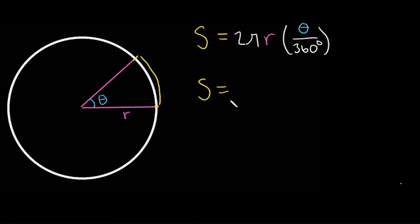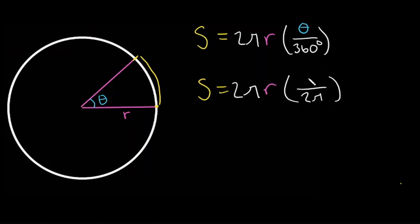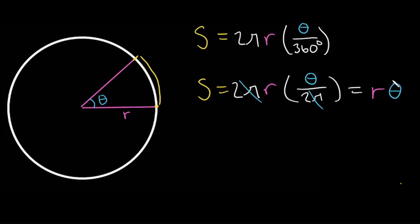What if we have the angle in radians? We start the same way with the circumference. We know 360 degrees equals 2π, so we write 2π in the denominator. If 2π is the total angle of the entire circle, then theta is our part. We can simplify: the 2π in the numerator and denominator cancel, leaving us with s = r times theta. So if your angle is in radians, arc length is just r times theta; if in degrees, it's 2πr times theta over 360.